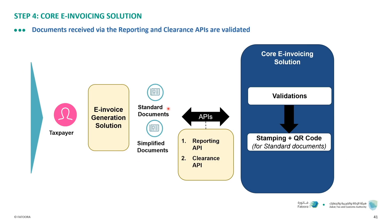If dealing with B2B transactions, use the clearance API for standard documents. If dealing with B2C transactions, use the reporting API for simplified documents. ZATCA's platform performs validation and confirms submission of your invoice. In the case of a standard document, ZATCA stamps the invoice and generates a QR code for you to print on the invoice.